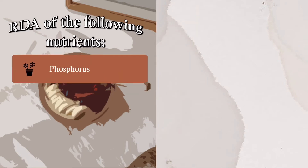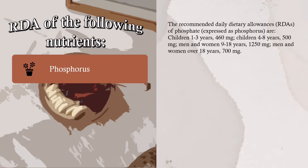Phosphorus: The RDAs expressed as phosphorous are — children 1 to 3 years: 160 milligrams; children 4 to 8 years: 500 milligrams; men and women 9 to 18 years: 1,250 milligrams; men and women over 18 years: 700 milligrams.